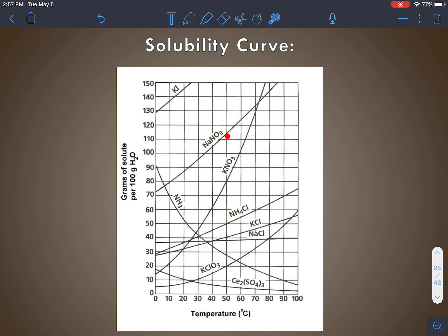We might think NaNO3, but don't forget about this potassium iodide. And technically that would be way up here. So potassium iodide has the greatest solubility at that temperature.